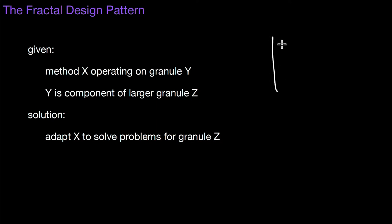In other words, if you're on one level here of the system, let's say this is a larger granule Z, and Z consists of multiple smaller granules. Let's say this is Y1 and this is Y2. What we know is we have a method X that operates on granule Y, let's say Y1. Then it's likely that it also operates on granule Z as well. That is what this pattern is about.